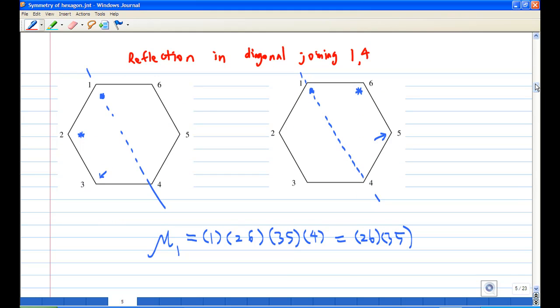Now let's look at a reflection in the diagonal joining 1-4. The markers we have are a dog, a star, and an arrow at locations 1, 2, and 3. After the reflection, we find that the dog at 1 still stays put at 1. The star at 2 will move to 6, and the arrow at location 3 will move to location 5.